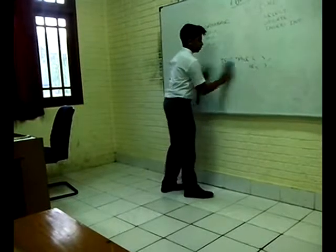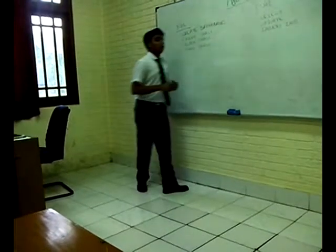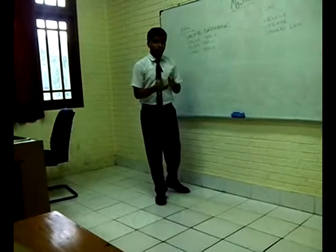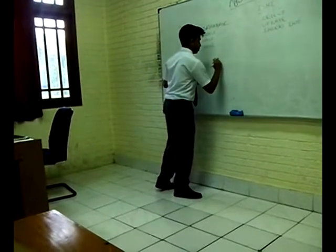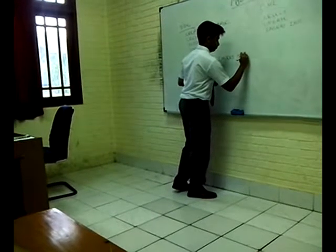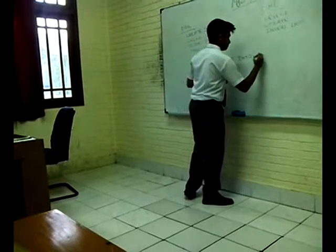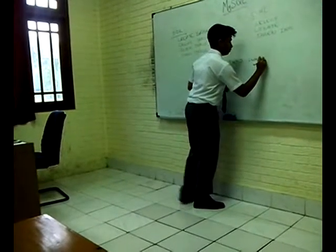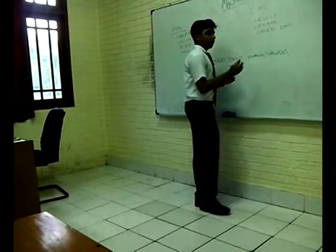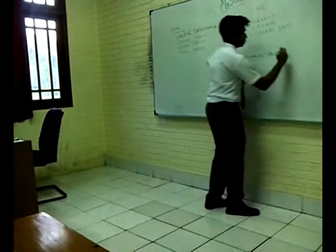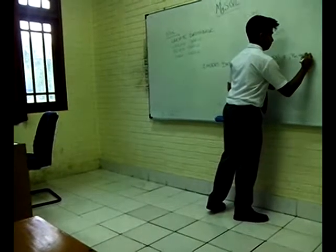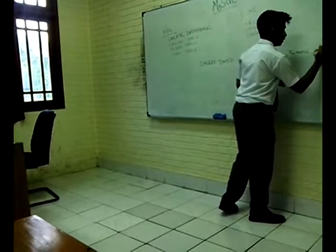Now I will move on to the DML statements. First is INSERT INTO. INSERT INTO is used to enter data into a table. For example: INSERT INTO, then the table name 'students', then VALUES, and the values in brackets — like 1 for the number, then the name, and then the age — then closing brackets and a semicolon.